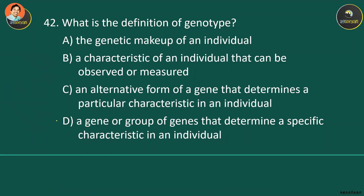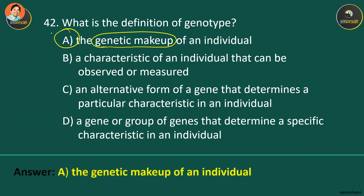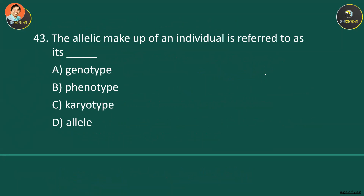What is the definition of genotype? Genotype is the genetic makeup of an individual — it is inside our cells and cannot be seen directly, but it can be expressed as a phenotype. The allelic makeup of an individual is also referred to as the genotype. So genotype and allelic makeup are the same concept.